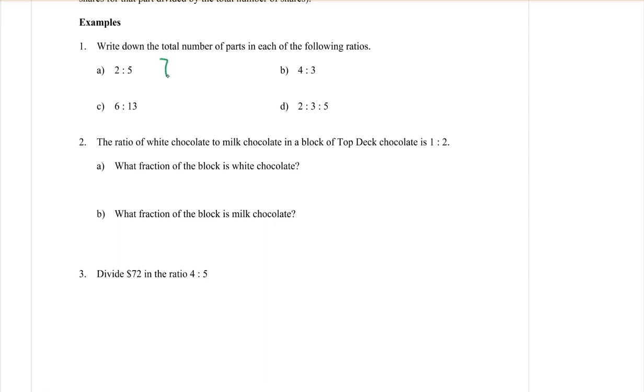Part B: 4 to 3, adding that together is 7 parts again. Part C: 6 and 13 makes 19 parts. And even if there's three numbers in the ratio, you still add them together. 2 plus 3 plus 5 does make 10 parts.